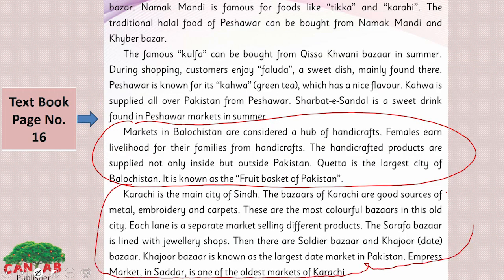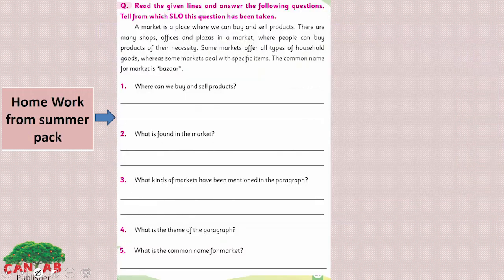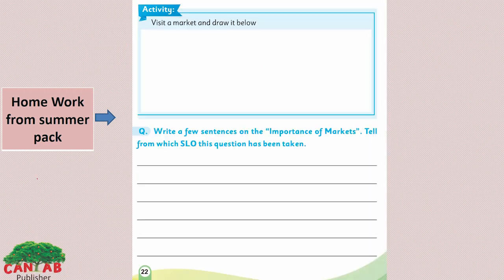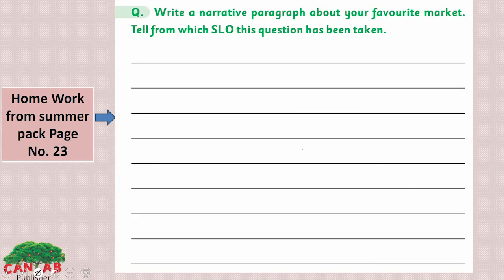Look at page number 20, question 3: mark the right answer from the given choices. All five sentences are from the text we just read. You have four options for each sentence and must choose the right one. Dear student, this is your homework from the Summer Pack. You need to read the paragraph carefully and answer the questions. Also, you need to visit a market and draw it below, as you can see the picture of a market in your textbook for Unit 3. Write a few sentences on the importance of markets.